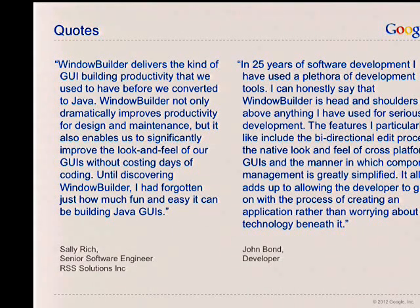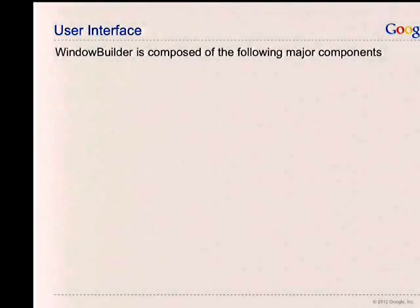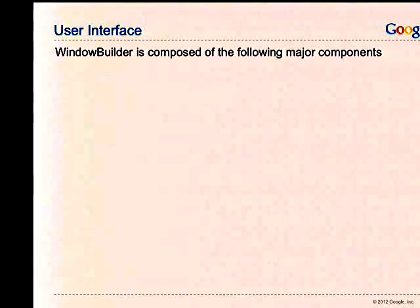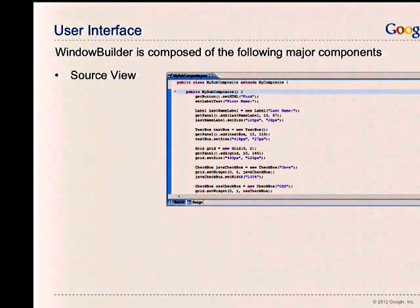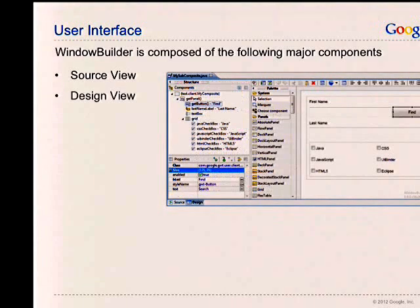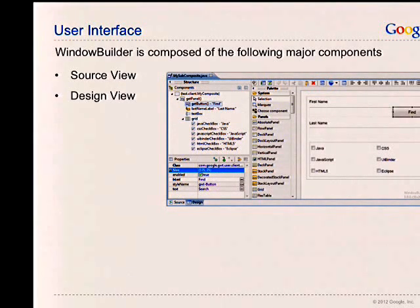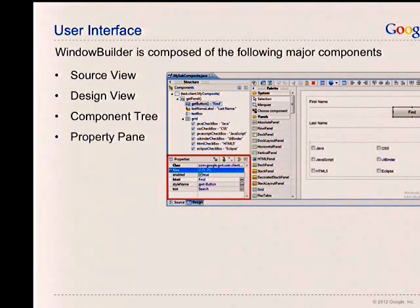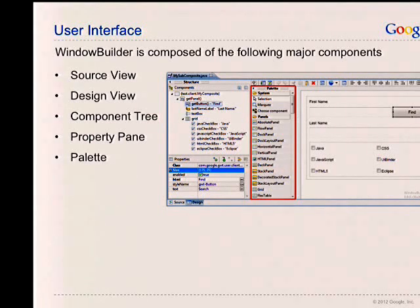A couple of quotes from users — I'll make these slides available for download later. Window Builder is composed of the following major components. When you first bring it up you see the source view — this is basically an embedded version of the Eclipse Java Editor, providing all the services you'd normally find there. Switch to design view and this is where it starts to get interesting. Design view is composed of the component tree in the upper left-hand corner, the property pane in the lower left-hand corner, and the palette in the center. All these views and sub-views can be moved around and rearranged any way you like.